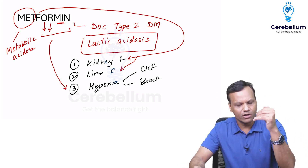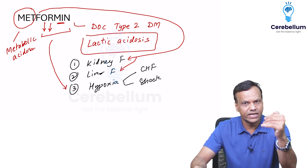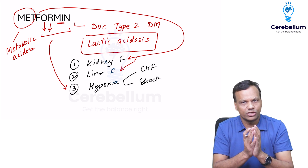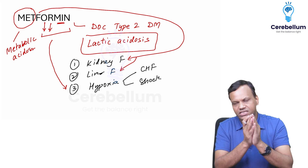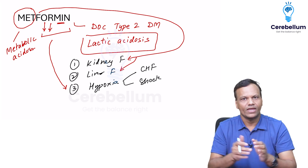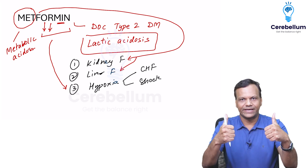So the three important contraindications are kidney failure, liver failure, and predisposition to hypoxia such as congestive heart failure and shock. Happy learning.